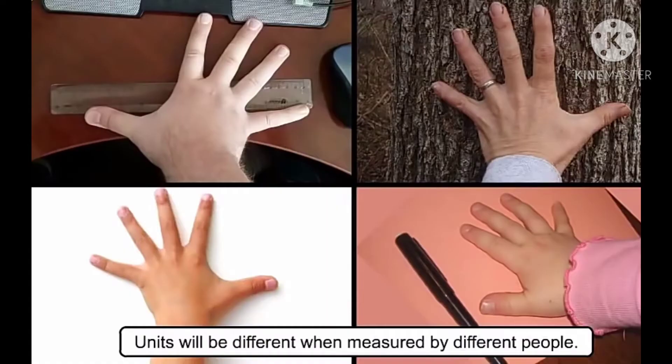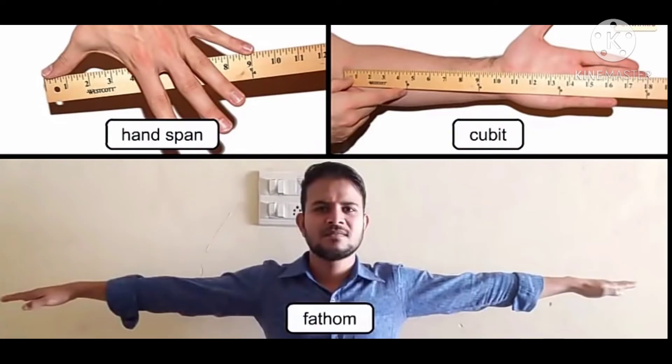But it has two main objections. The first one is units will be different when measured by different people. The second one is various units have no connection with each other. For example, handspan, cubit, and fathom are not related to each other.